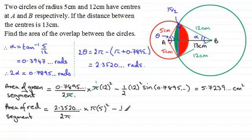So we use half the product of the two sides, that's 5 times 5 or 5 squared, times the sine of the included angle, which is 2 theta. And that then is 2.3520 and so on. And again, if you work this out in your calculator, you should find you get 20.5243 and so on, centimeter squares. So we now have the areas of each of the two segments, and we can add them together to give us the area of the overlap.